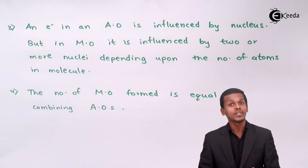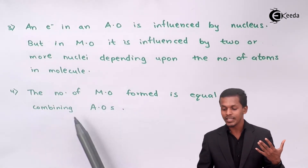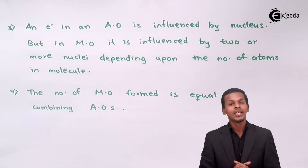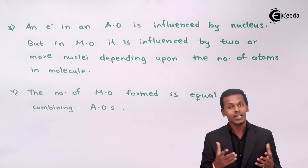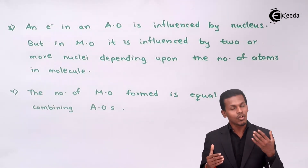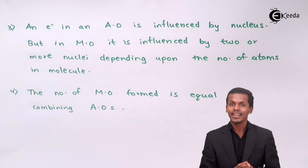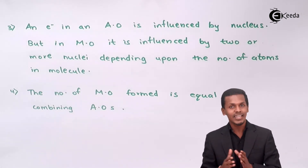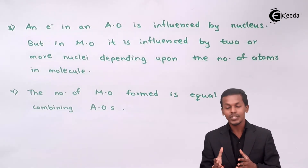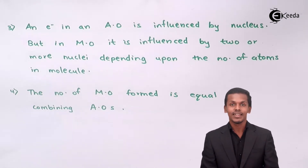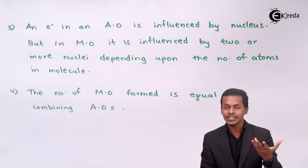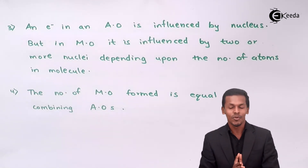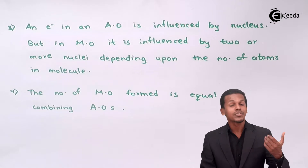The fourth postulate states that the number of molecular orbitals formed equals the number of combining atomic orbitals. If two atomic orbitals — from two different or two similar atoms — combine with each other, two molecular orbitals will be formed. The number of atomic orbitals that participate in the formation of a molecule will create the same number of molecular orbitals.